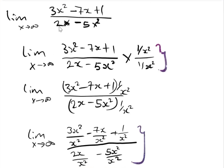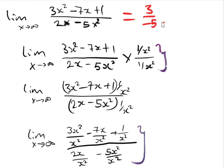In the case where you're writing an objective or multiple choice exam, you don't have to show your steps like this. The secret of limits as x tends to infinity is: when x approaches infinity, all you have to do is take note of the coefficient of the highest power of x. For this example, the coefficient of the highest power of x in the numerator is 3 and in the denominator is minus 5, so the answer is 3 over minus 5.